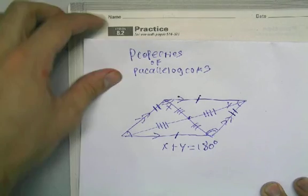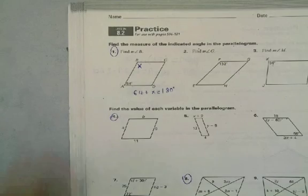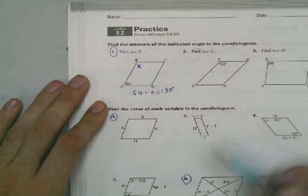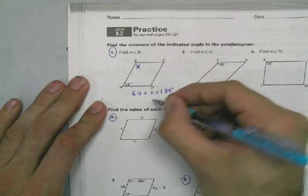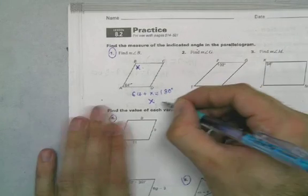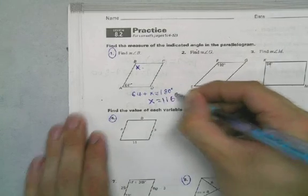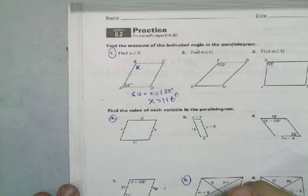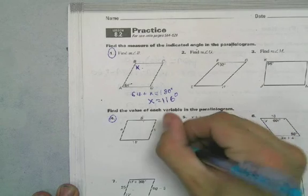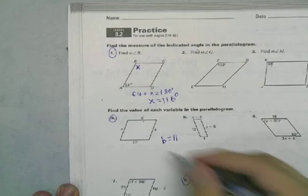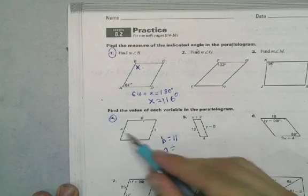So using these properties, let's solve some of these problems. I already started this one. I know that this is supplementary, so x is going to equal 116 degrees. We know that these guys across from each other are congruent, so b is going to equal 11, and a is going to equal 9.